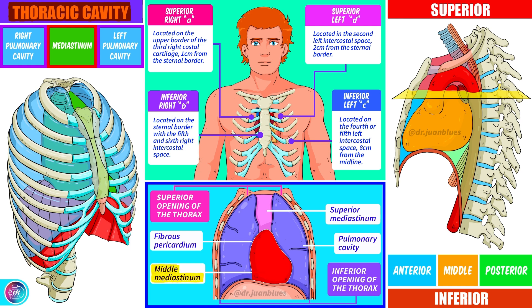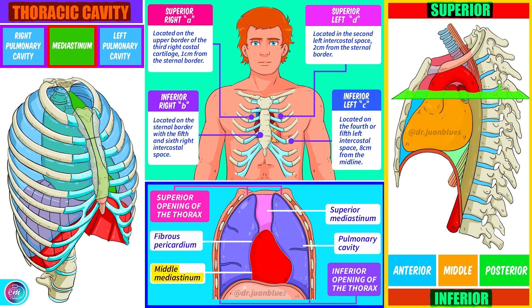Let's go over the divisions of the mediastinum so that we can fully understand. The mediastinum is basically divided into two parts: the superior and inferior mediastinum. The division between the two is established from the transverse plane of the thorax. The inferior mediastinum is, in turn, divided into anterior, middle and posterior. The heart is located in the middle mediastinum, which in this case is shown in orange.